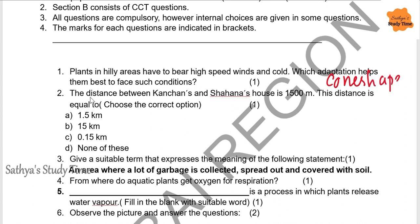Needle-like leaves. Next: The distance between Conscience and Shahana's house is 1500 meters — this distance is equal to 1.5 kilometers. Give a suitable term that expresses the following: an area where a lot of garbage is collected, spread out, and covered with soil. That is called a landfill.